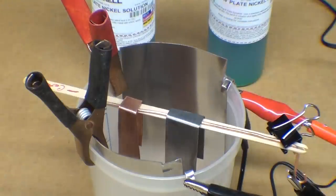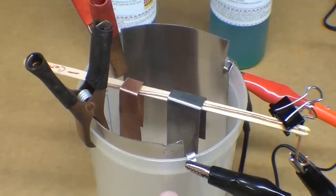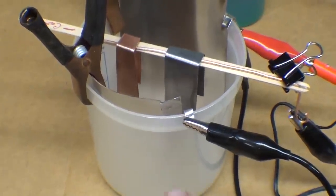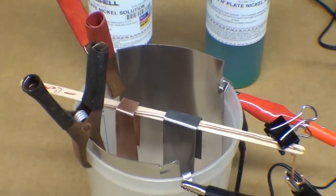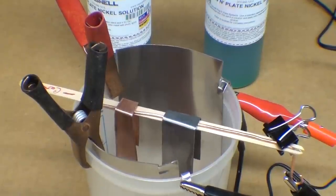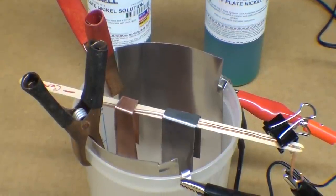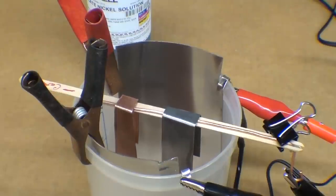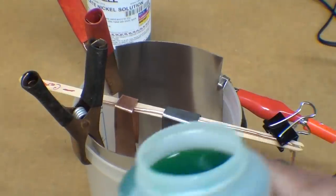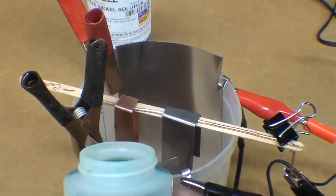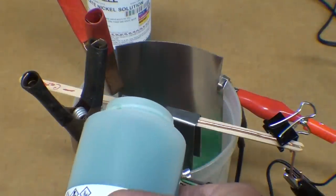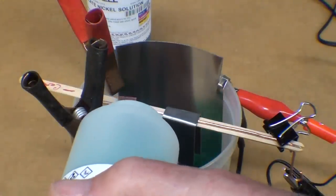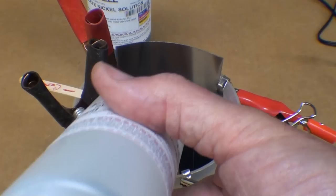Now the two work pieces that I'm plating are laying on a copper wire, and that extends over. That's the cathode—these pieces are the cathode. The negative lead from the wall wart is touching it. Now all I need to do is add the electrolyte, the plug-and-plate nickel solution.